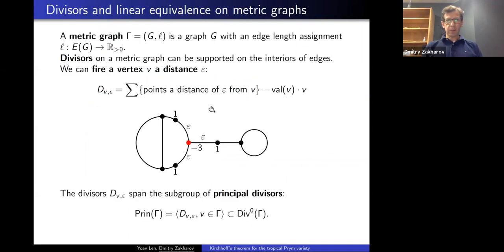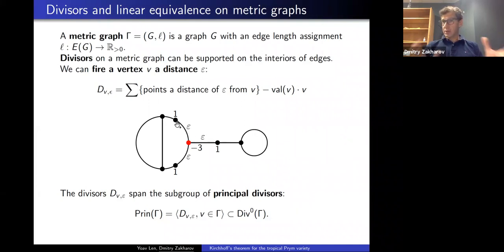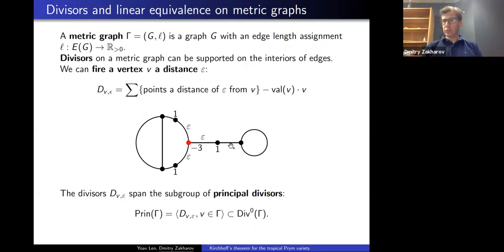Now let's talk about metric graphs. In a metric graph, I take a certain underlying combinatorial graph and assign edge lengths to all edges. When I look at divisors on a metric graph, I treat the graph as a metric space in the obvious way, and I'm allowed to put points on the interiors of edges. So there are now infinitely many points on the graph, and a divisor is simply an element of the free abelian group generated by its points.